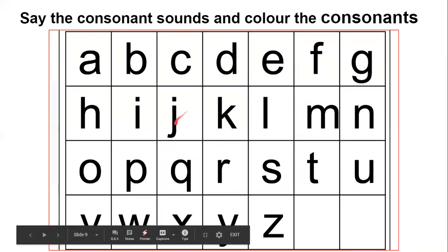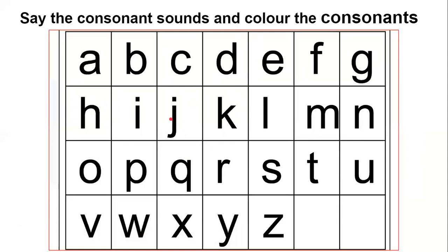We learned vowels and consonants, right? So today we learned consonants. So is A a consonant? No. So A is a vowel. Is B a consonant? Yes. So I will say B. What's the sound of B? Buh. So buh and I'll color it.